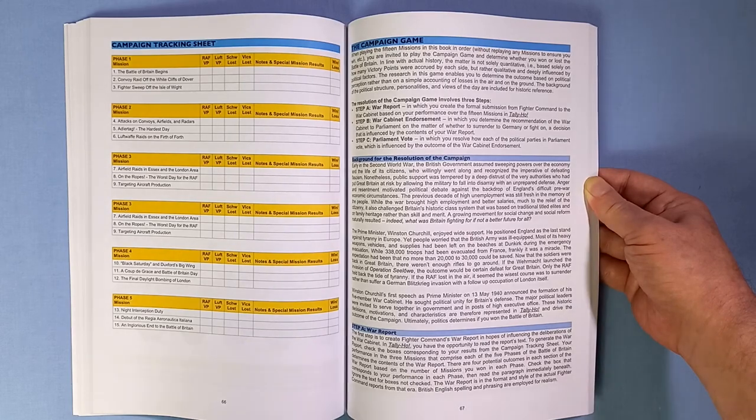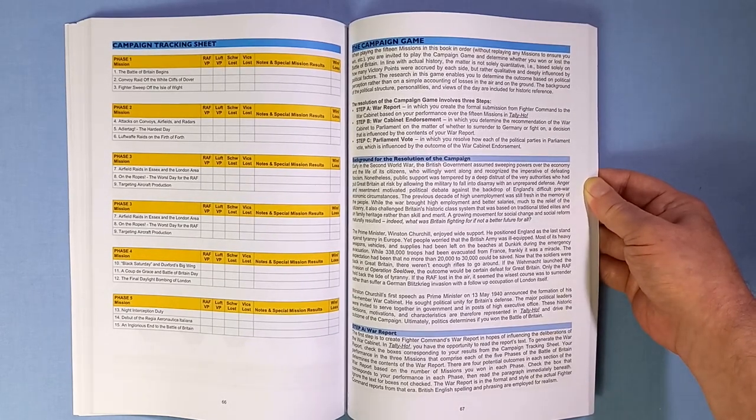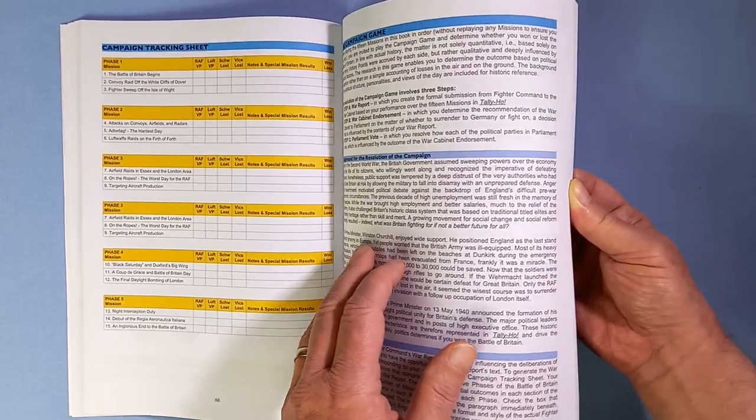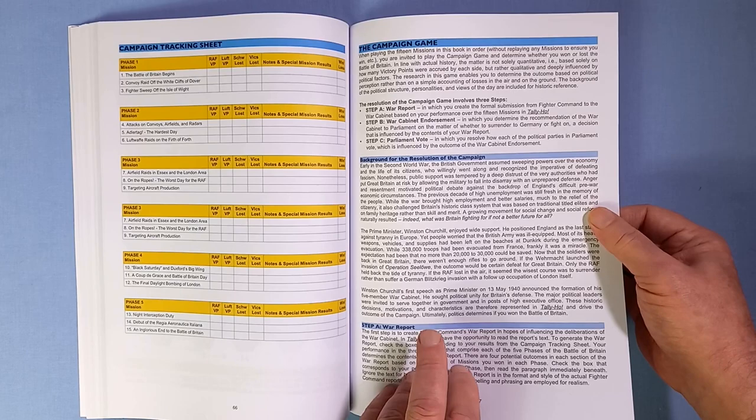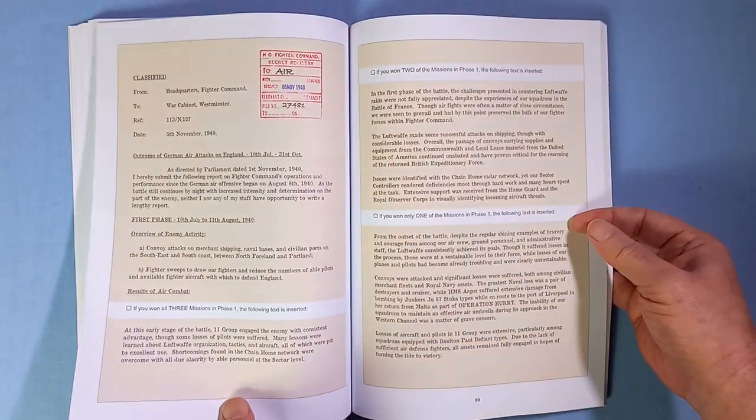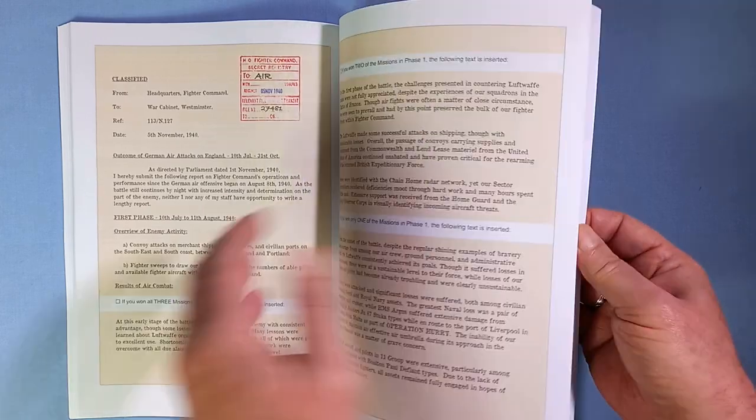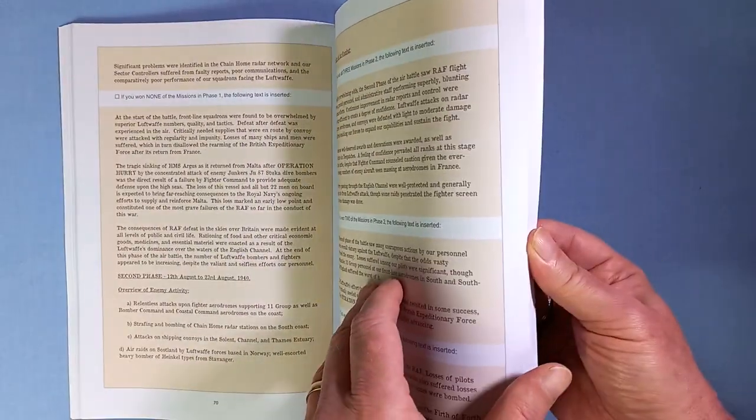And depending on how successful you are in each of those phases, determines how well you do for the rest of the campaign. This is quite an involved game. So here's how to play the campaign - there are three parts to it. The war report. And here we see, I won't show you these because you read certain bits of this depending on how successful you are in each phase of the game.